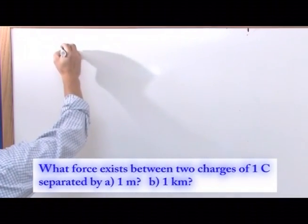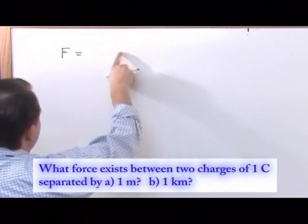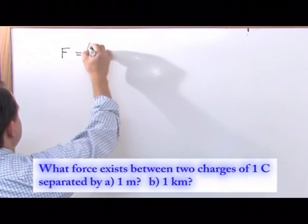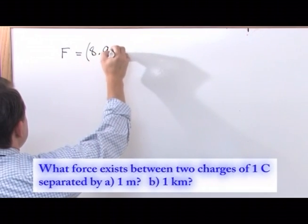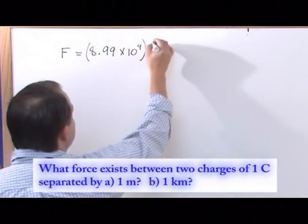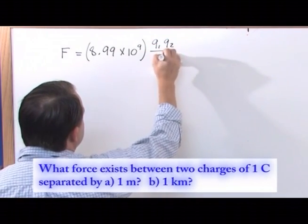So remember that Coulomb's law is the following: the force is equal to, and it was one over four pi epsilon naught, but we're going to use this constant that I told you is what it reduces to, 8.99 times 10 to the 9 times the first charge times the second charge over r squared.